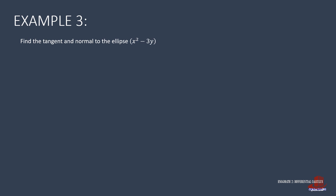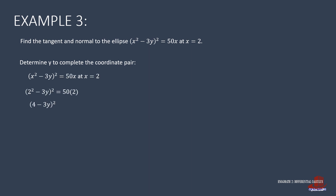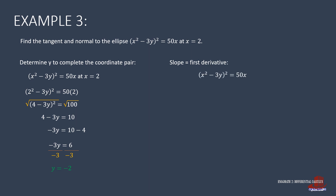Example 3: The equation is the square of (x squared minus 3y) equals 50x, with the point at x=2. Substituting x=2 gives the square of (4 minus 3y) equals 100. Taking the square root: 4 minus 3y equals 10. Transposing 4, we get negative 3y equals 6. Dividing by negative 3, y equals negative 2.